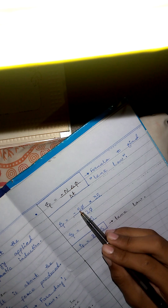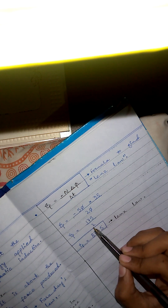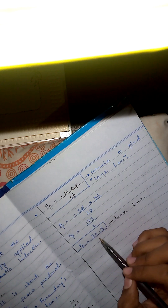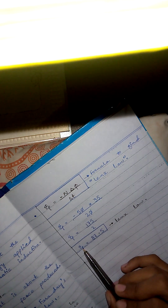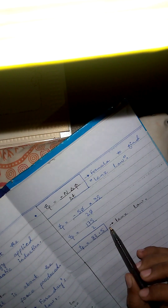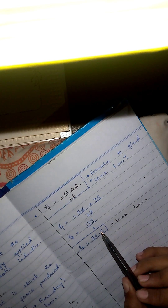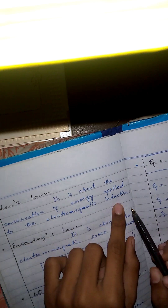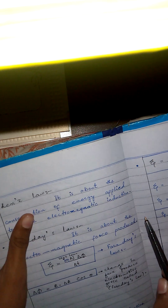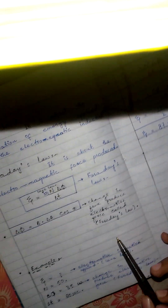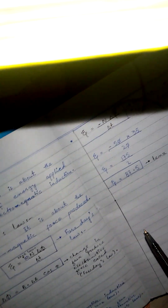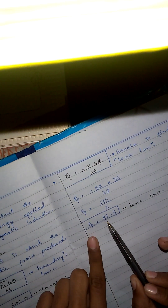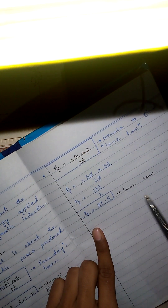So 175 divided by 2 is 87.5. This means the electromagnetic induction applied on the conservation of energy is 87.5 volts. The electromotive force (change in flux) is 35 weber, and the electromagnetic induction applied — which represents conservation of energy via Lenz's law — is 87.5. That is Lenz's law.